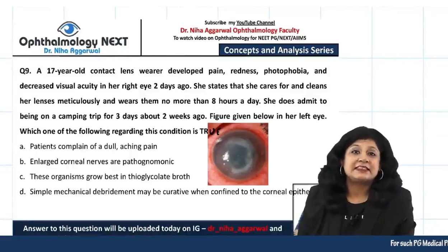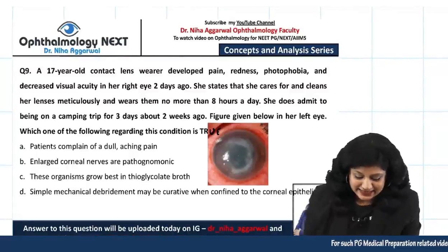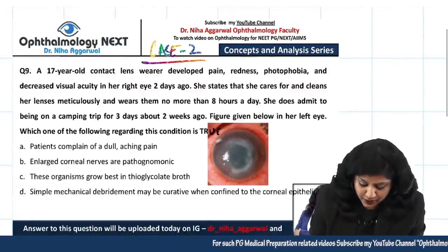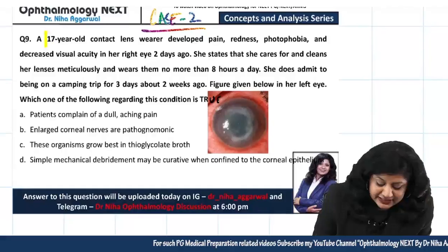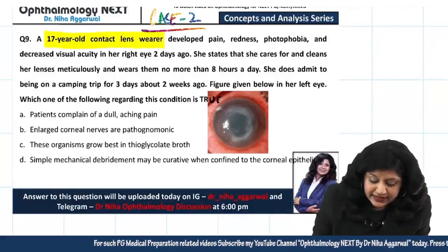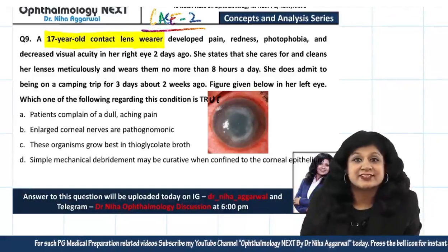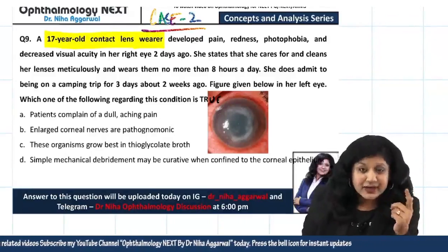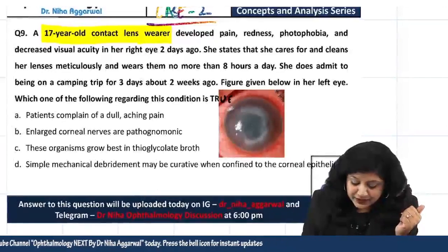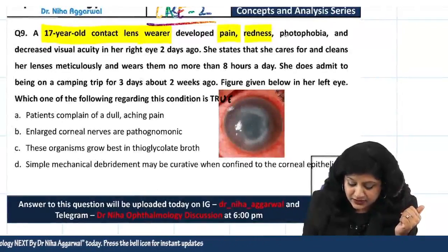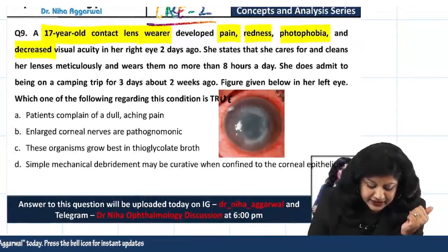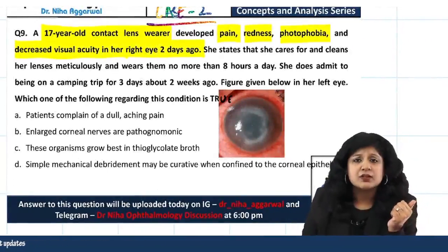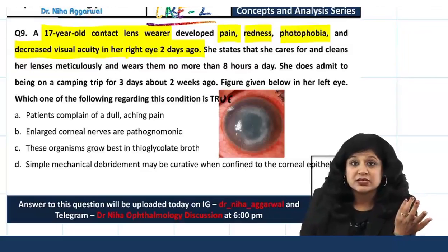Hello guys, welcome to the Concepts and Analysis series, and this is Case Number 2. We have a 17-year-old contact lens wearer. As soon as you hear 'contact lens wearer,' something should strike your mind. This patient developed pain, redness, photophobia, and decreased visual acuity in the right eye 2 days ago — something very acute leading to signs of inflammation.